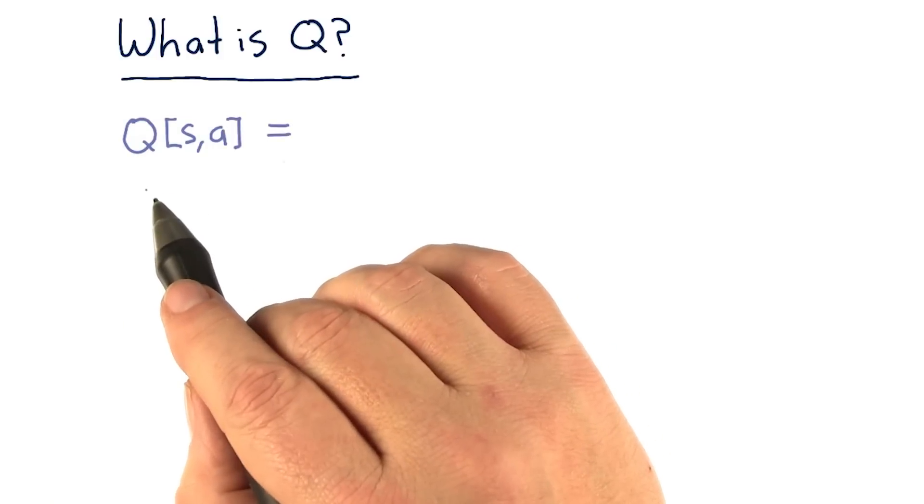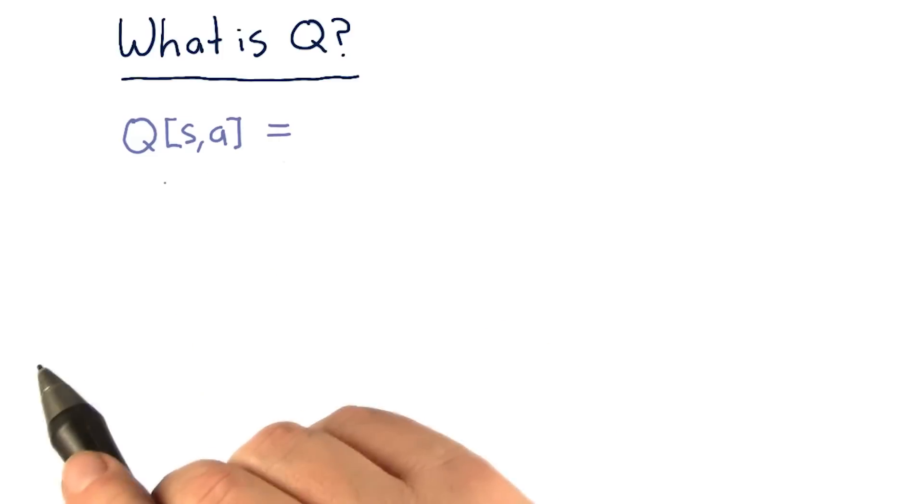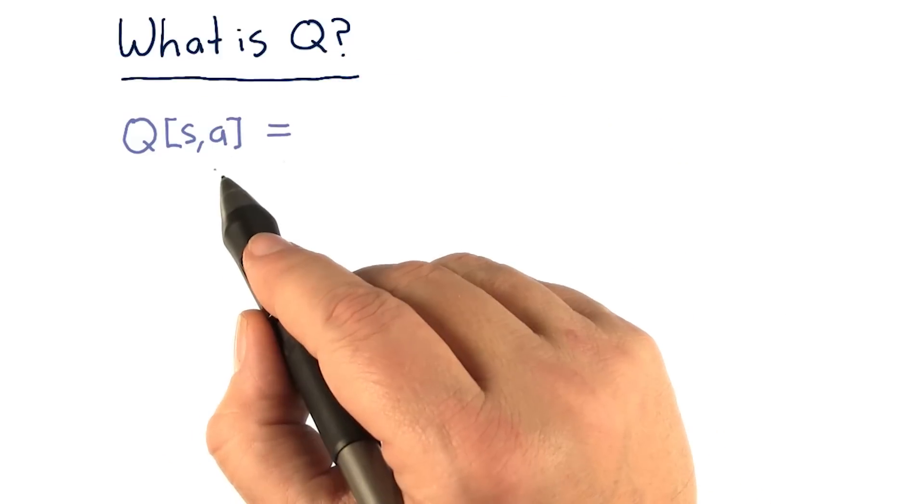Q can be written as a function, so we might have parentheses around S and A. Or you can think of it as a table. So in this class, we're going to view Q as a table. And it's got two dimensions, S and A.